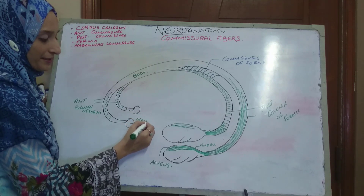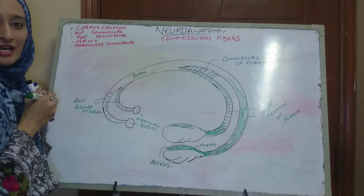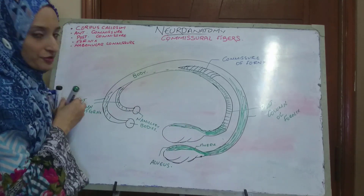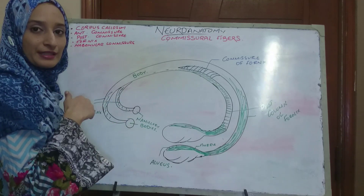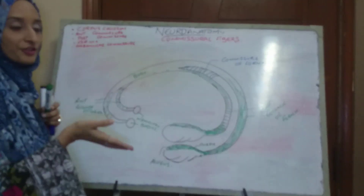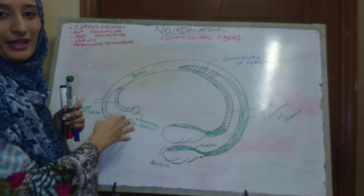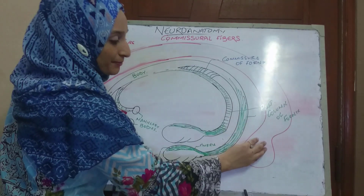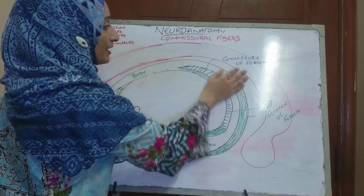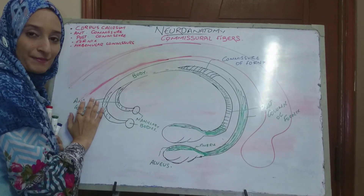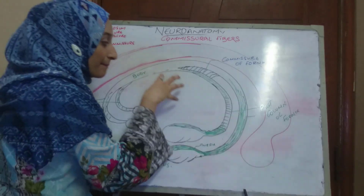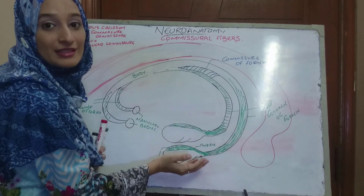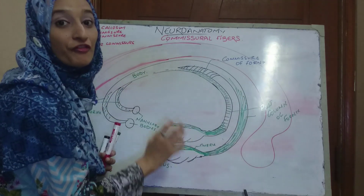As the posterior columns curve superiorly and anteriorly, they join together to form the body of the fornix. Just before forming the body, transverse fibers running between the two posterior columns can be appreciated — these are known as the commissure of the fornix, transmitting information from one hippocampus to another. As the body approaches anteriorly near the septum pellucidum and the mammillary bodies, it splits into two anterior columns of the fornix. The fornix transmits fibers from the hippocampus to the mammillary bodies and thalamus.